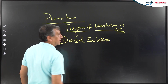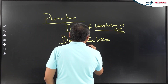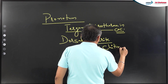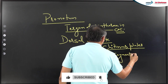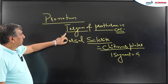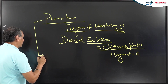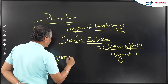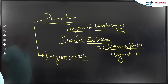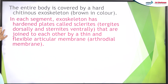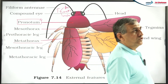Each segment in cockroach is covered by four chitinous plates called sclerites. Surrounding one segment, four chitinous plates are present. The chitinous plate on the dorsal side of the prothorax is known as the pronotum. It is the largest sclerite in the body of the cockroach — that is why NCERT mentioned the labeling 'pronotum' rather than 'prothorax'.